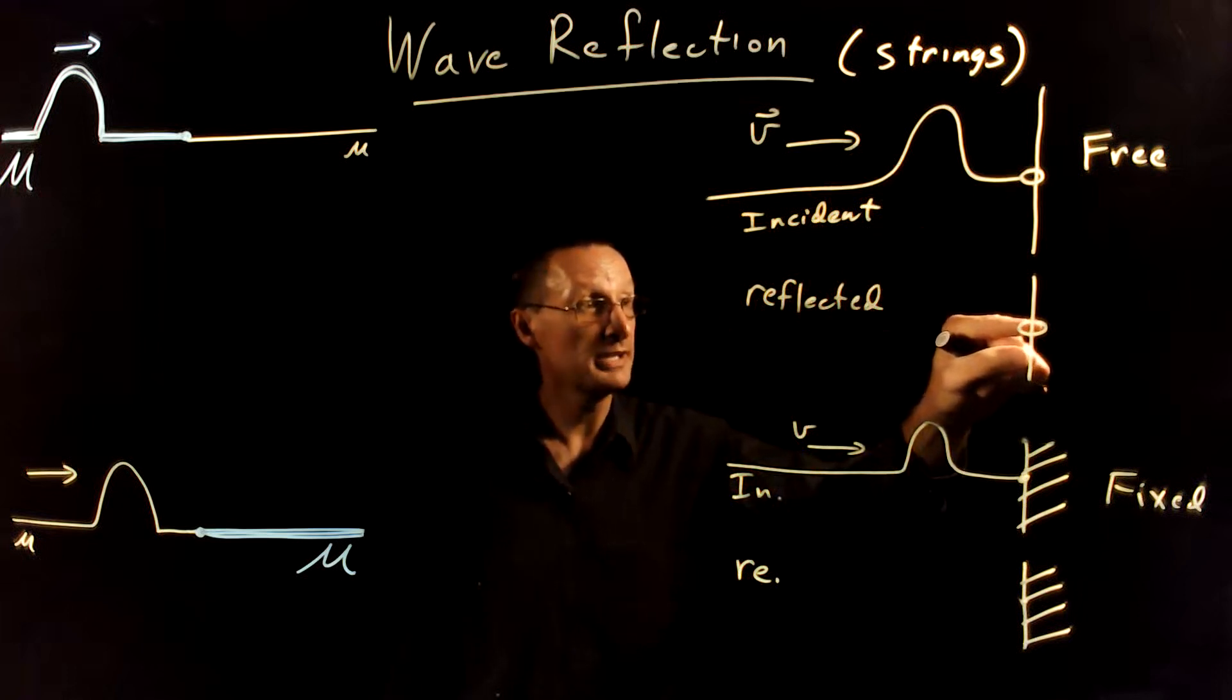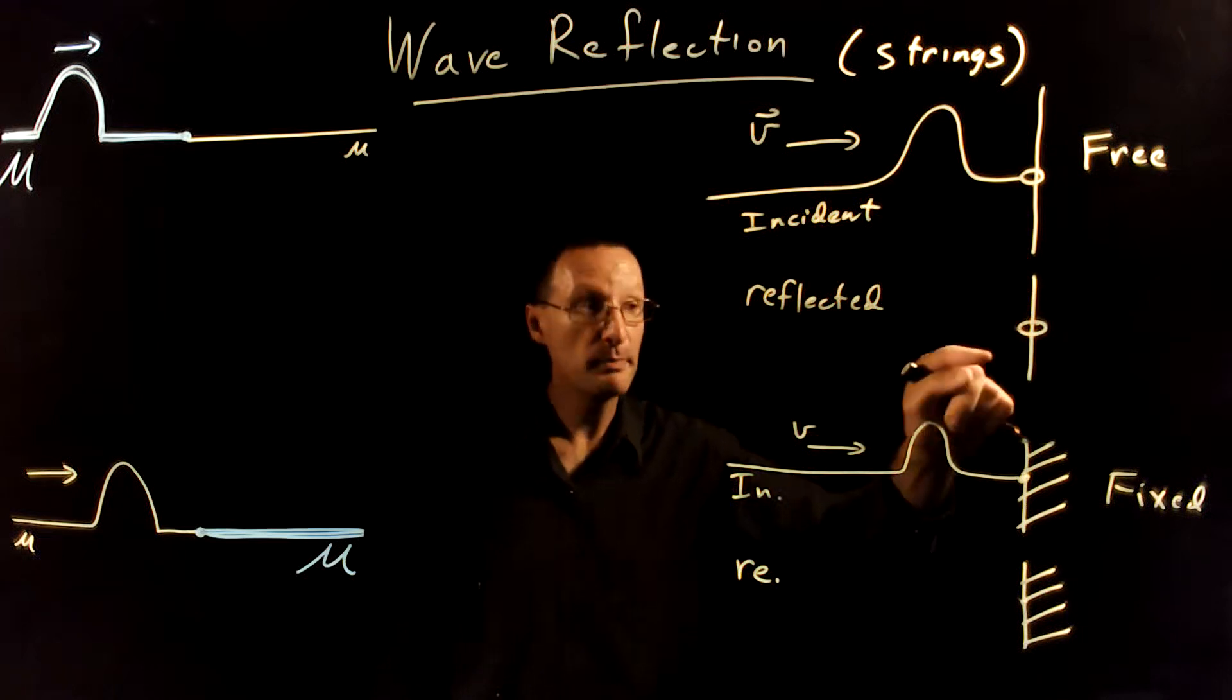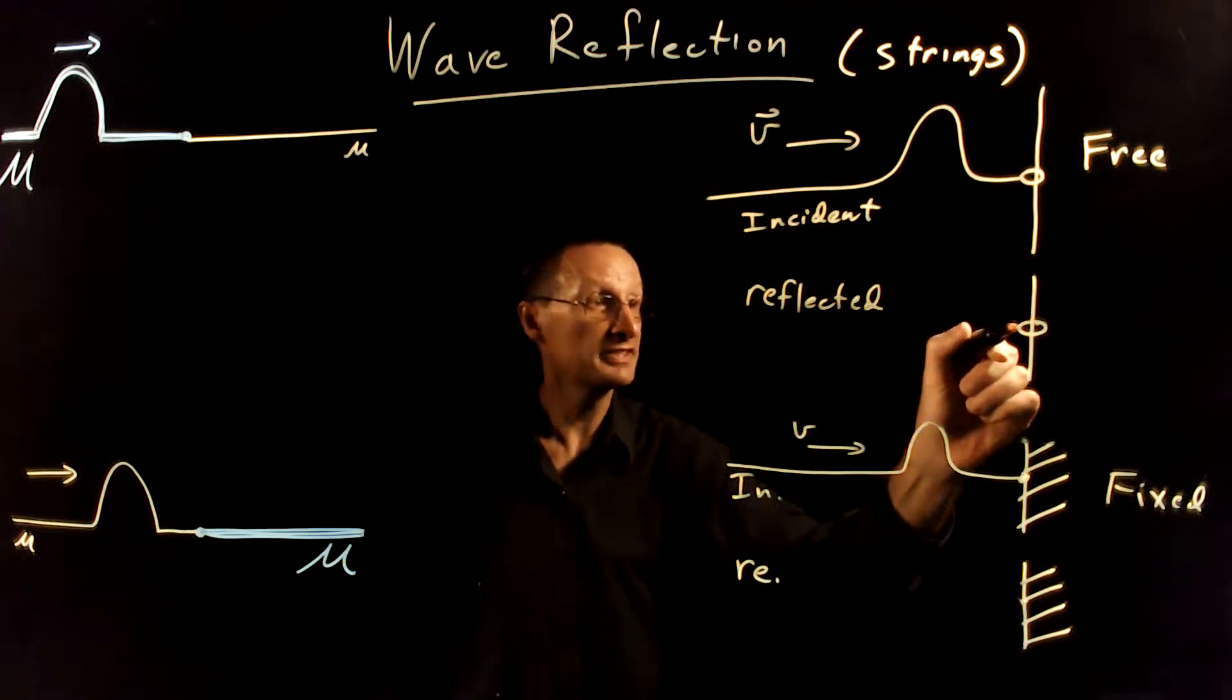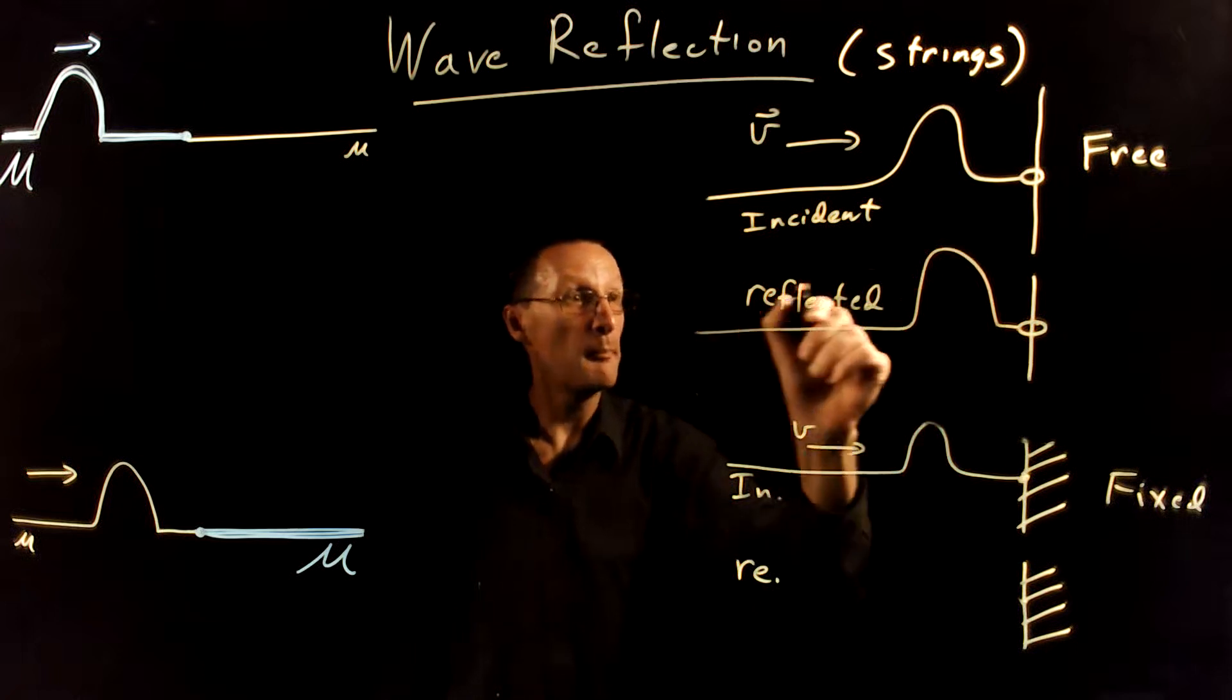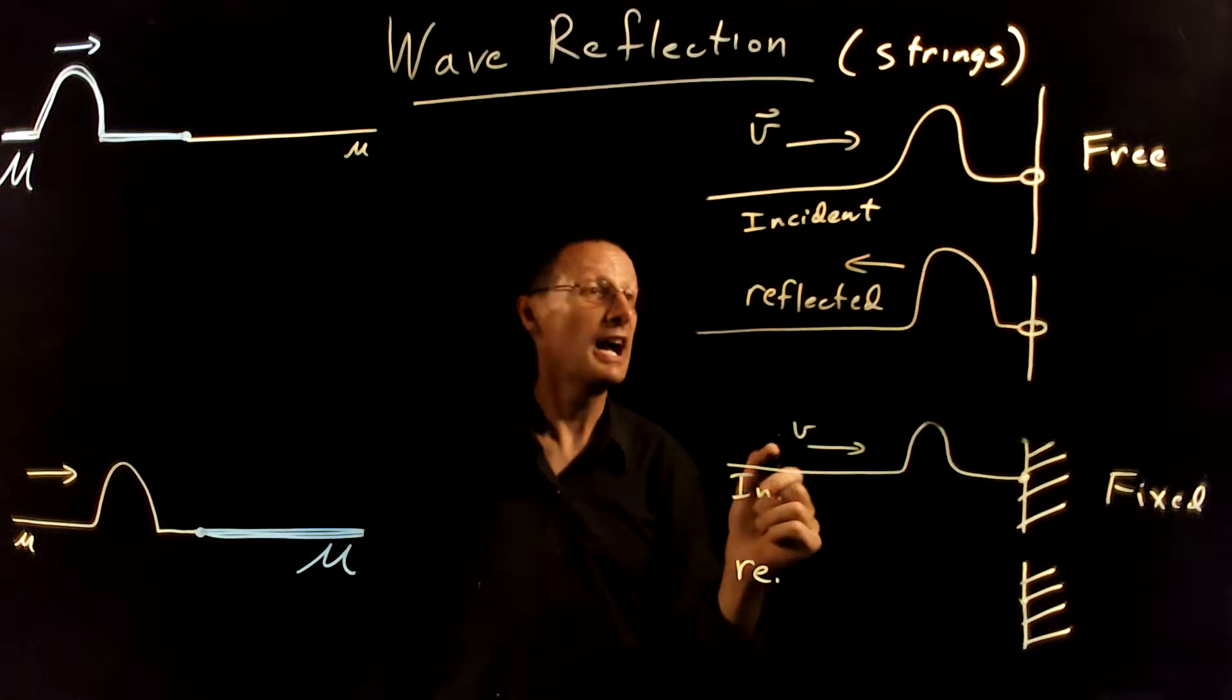So we send an incident wave in here, and what's going to happen when it reaches the end or the boundary is that the ring is going to come up and then come right back down because it's free to move. That's going to send a wave pulse backwards the other way - a reflected wave that is in phase, meaning it's right side up compared to the original.